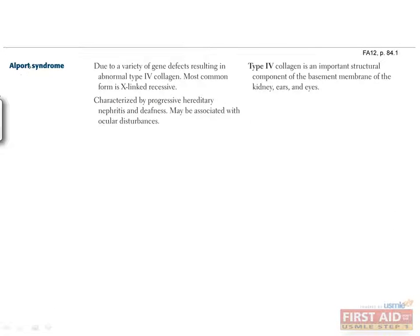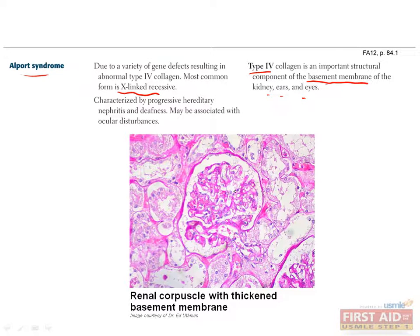The last collagen synthesis defect we'll talk about is Alport syndrome. This is caused by a defect in type 4 collagen, which is involved in basement membranes. Unlike the other collagen defects, Alport's is X-linked recessive. Since type 4 collagen is involved in the basement membranes of the kidneys, the eyes, and the ears, Alport syndrome can cause nephritis, deafness, and impaired vision. This image shows the thickening of the glomerular basement membrane due to glomerulonephritis that can be caused by Alport's, and this usually causes hematuria.